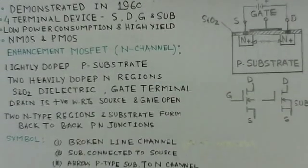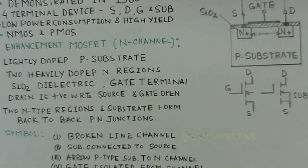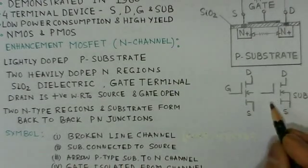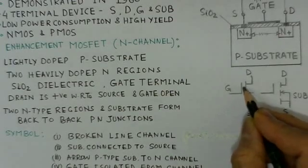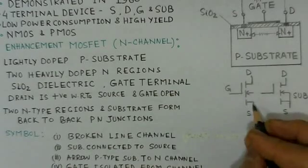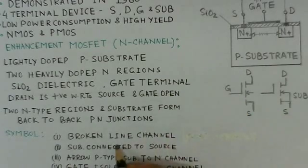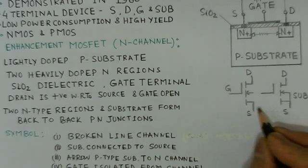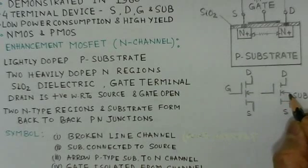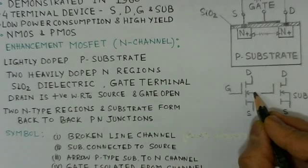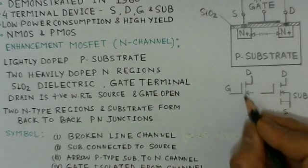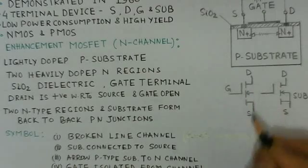The symbol for the enhancement MOSFET has a channel that is broken — that means it is in three parts, it is not a continuous channel. So it is a broken line channel. The substrate is normally connected to the source as indicated here. The arrow is from the P-type substrate to the N-type channel, which indicates it is an N-channel MOSFET.